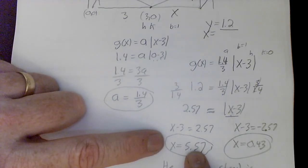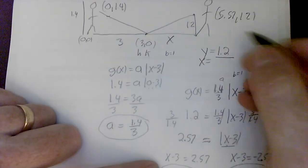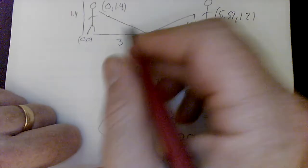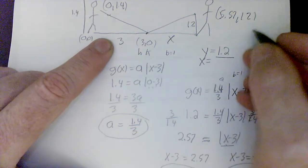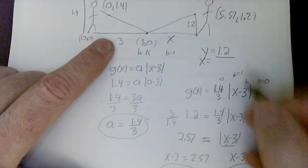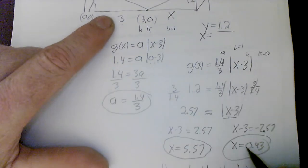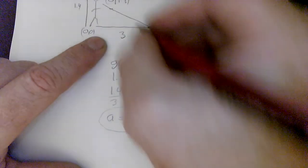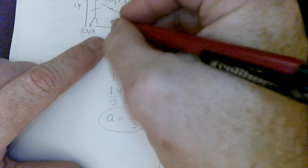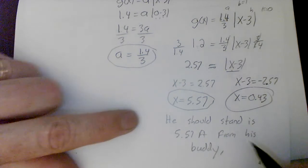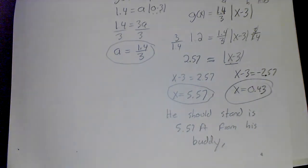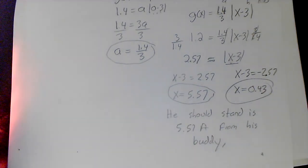Well, one of them gives you 5.7, which is where this is going to be. He has to stand 5.7 feet away, assuming this is (0,0), to get a height of 1.2. So that would be 1.2. One of them is going to be about 0.43, which would be about here. That's your 0.43. But the answer is he should stand 5.7 feet away from his buddy.